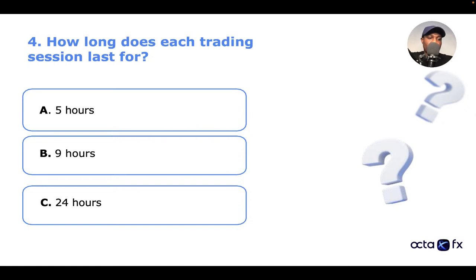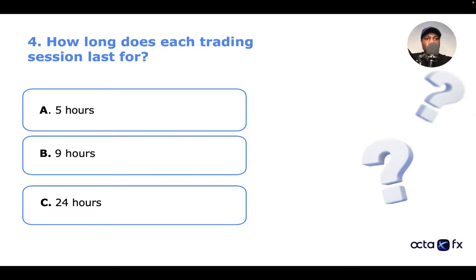Jude says number four is C. Trukoma says A. Jackson says C. Colin says A. Dio says C. Goody says B. Samuel says B. Emmanuel Owa says B. Lamini says C. Christiana says C. Alexander Anthony says B. Favor says C. How long does each trading session last? I'll review the right answer in part two.